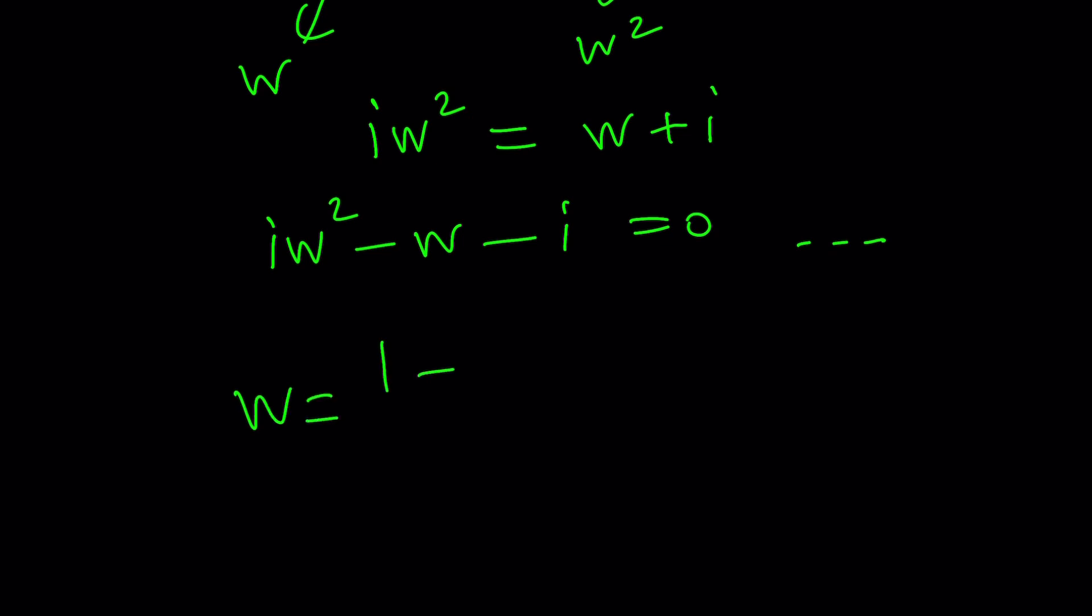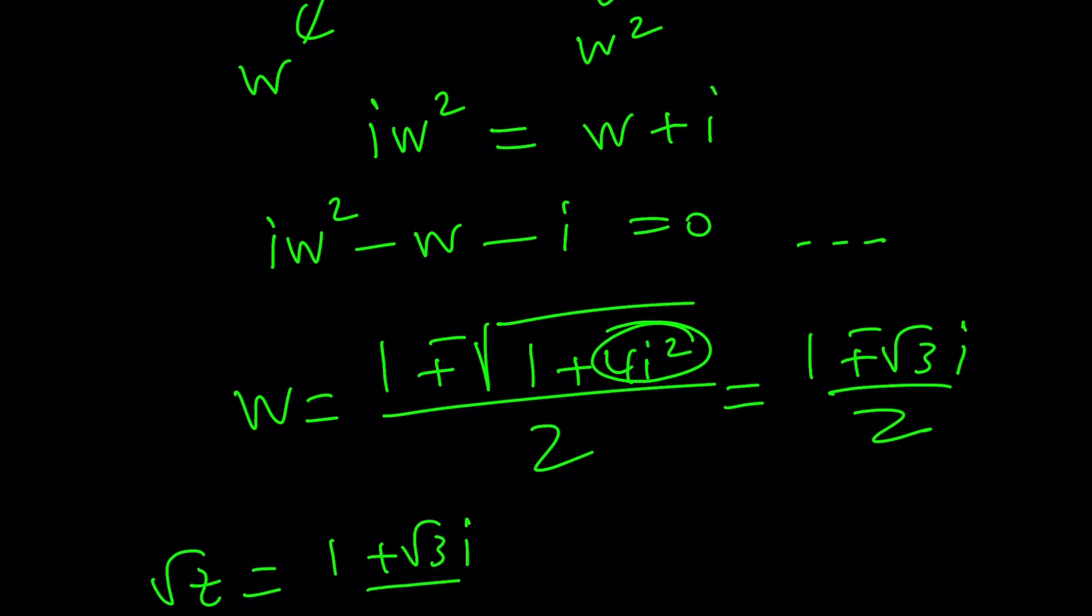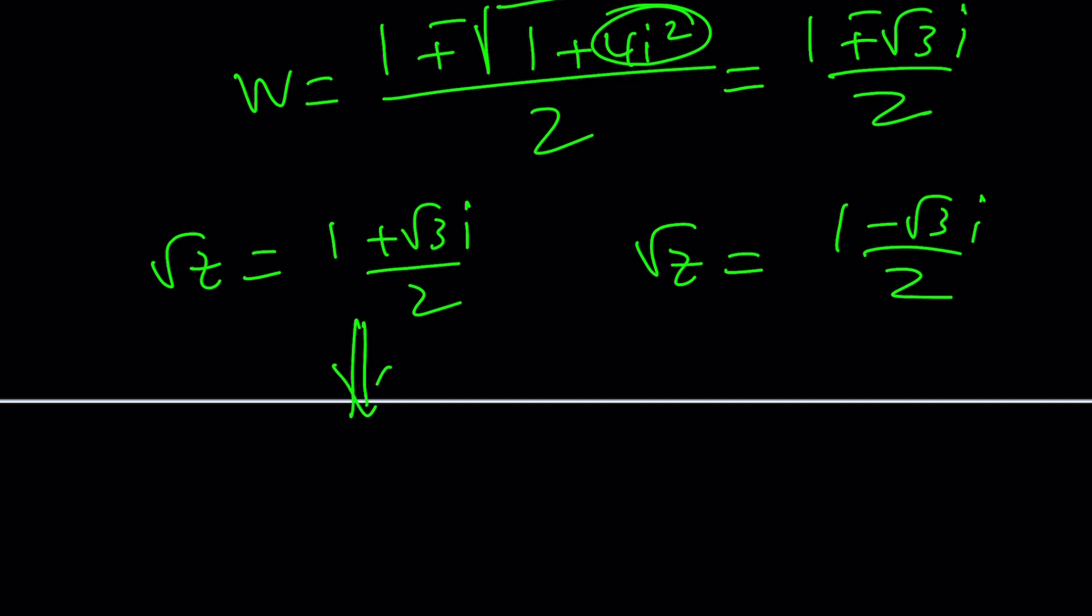W equals negative b plus minus the square root of b squared, which is 1, minus 4ac, which is plus 4i squared. And that is negative 4, negative 3, plus minus root 3i over 2. As you can see, we get the same solutions. Wait a minute. Isn't this weird? So w is square root of z. So square root of z is equal to this or this, right? So by squaring both sides, you should be able to get the solutions. And we're going to get the exact same solutions and are they both valid? That's for you to find out. I'm going to leave it as an exercise. Please don't hate me for that.